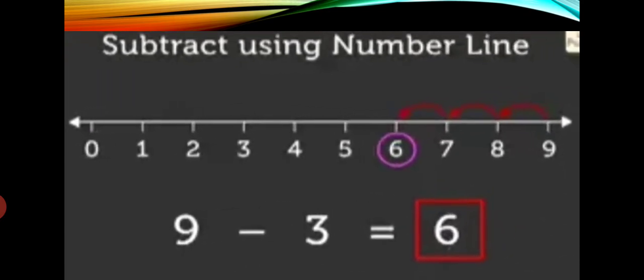This is also a method of subtraction. You can make a number line. Place your pencil on the bigger number. For however many numbers you have to subtract, you jump that many times. For example, you had to subtract 3. First you come to 8 — 1 number. Then you come to 7 — 2 numbers. Then you come to 6 — 3 numbers. You have made 3 jumps and reached 6. So your answer will be 6.